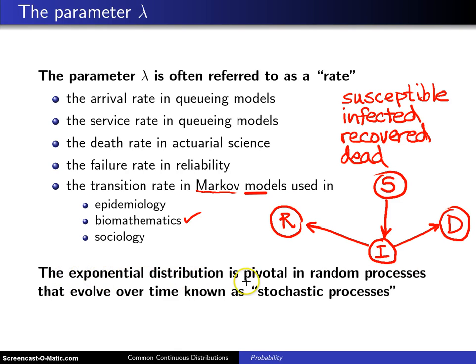The exponential distribution is absolutely pivotal in random processes that evolve over time, often termed stochastic processes.